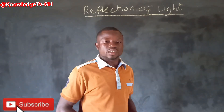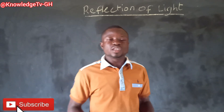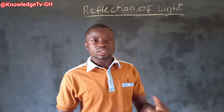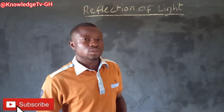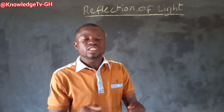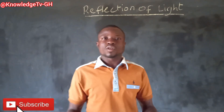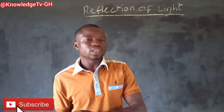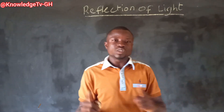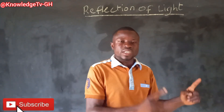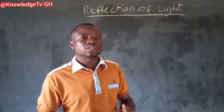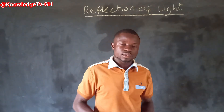Reflection of light is the bouncing back of light into the same medium when it strikes a smooth surface. So when you reflect a light, or you incident a light on a smooth surface and you see the direction of the light coming back into the same medium, that is the condition — the same medium. Then we say reflection has occurred.